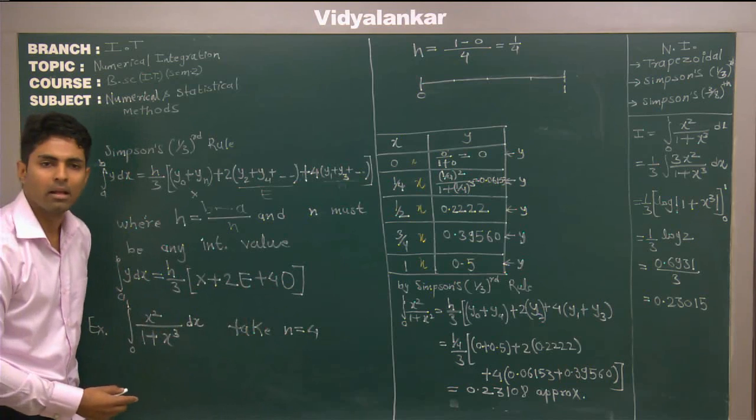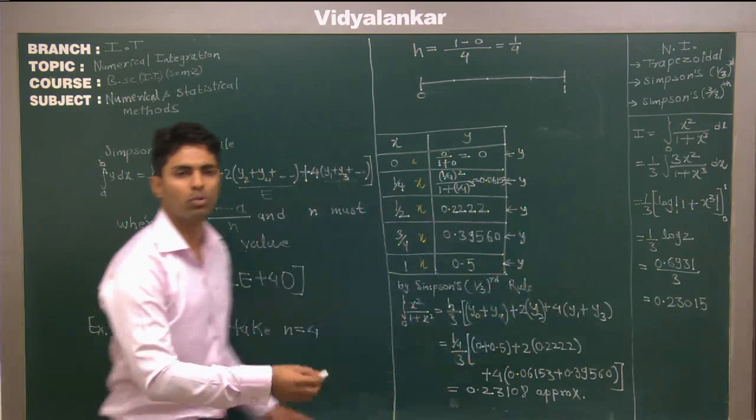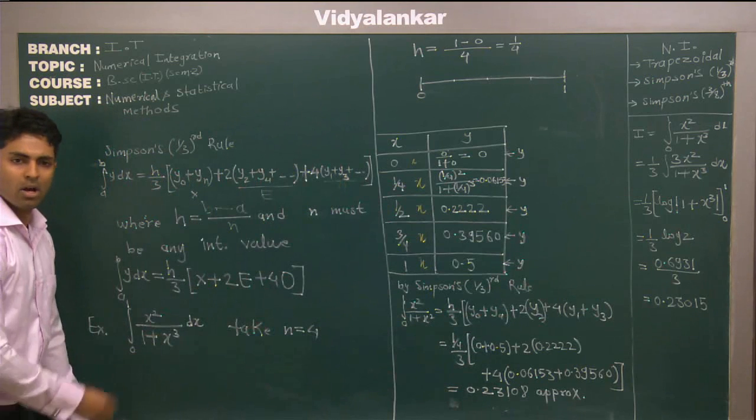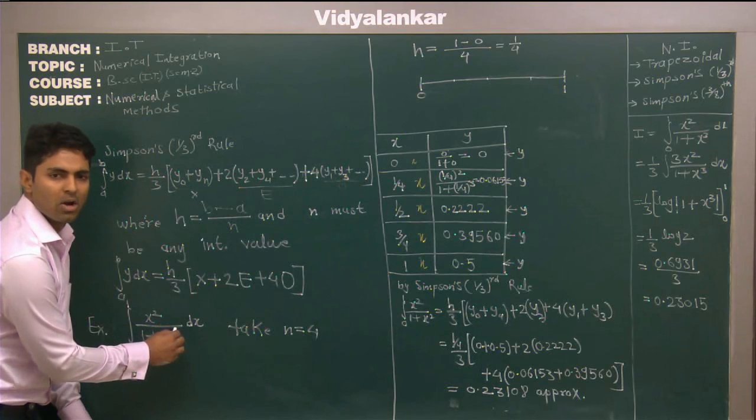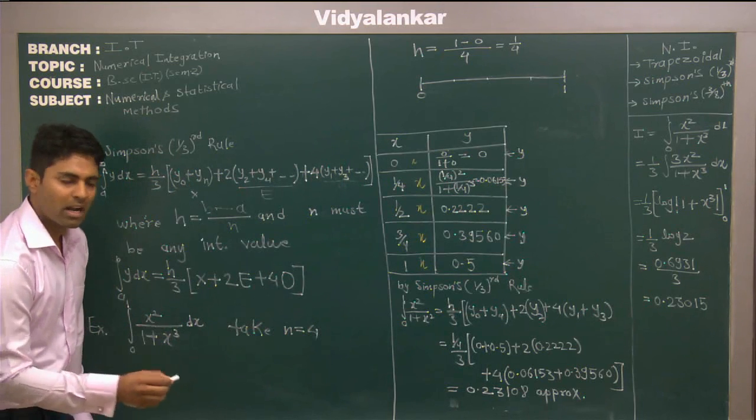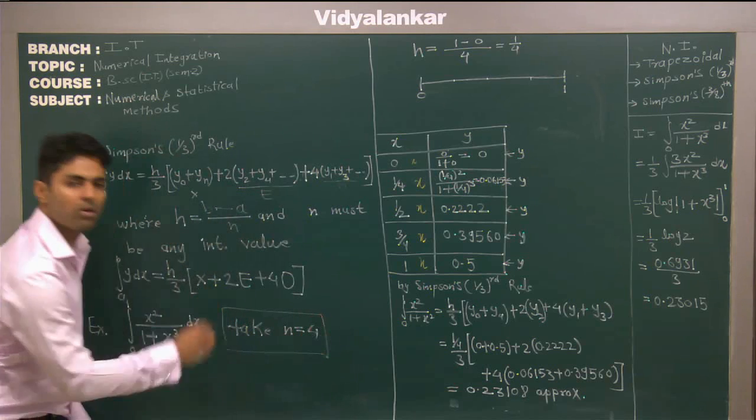Now take one example, same example which I have done here and used to do in Simpson one third rule. Integration 0 to 1, x square upon 1 plus x cube dx. In problem they have told take n equal to 4.